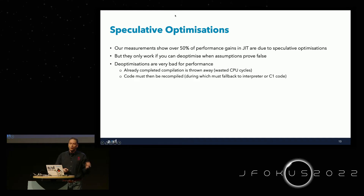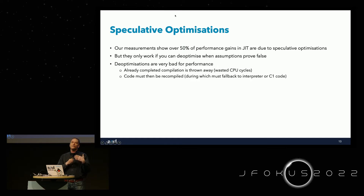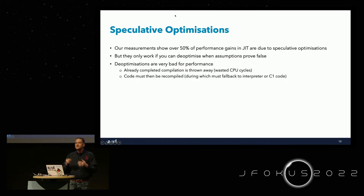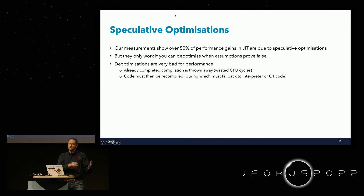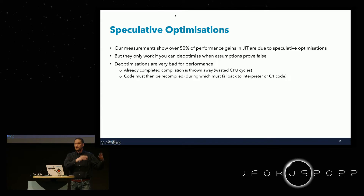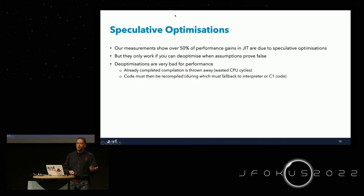Speculative optimizations are extremely important. Our measurements show that over 50% of the performance gains from JIT compilation are purely down to speculative optimizations. However, they only work if you can de-optimize when speculations prove false — something that's impossible in a static compiler. De-optimizations are bad for performance: you've already completed compilation, you throw away that work, and then recompile — effectively doing twice the work. You also fall back to interpreted mode or C1 compiled code while re-optimizing.